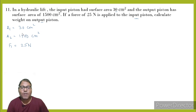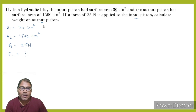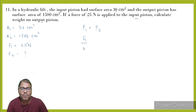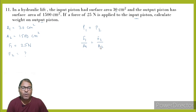We need to calculate the force on the output side, F2. This is a hydraulic lift or hydraulic press problem, which works on Pascal's law. Pascal's law means pressure at both ends is equal — input and output. So P1 equals F1 over A1, and P2 equals F2 over A2. Therefore F2 equals F1 times A2 divided by A1.